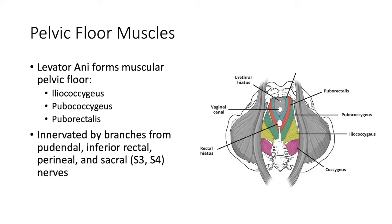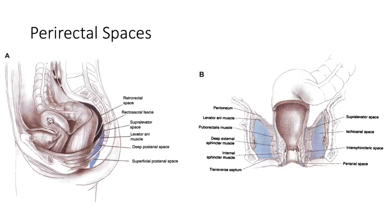It is worth knowing the muscles that make up your levators. The spaces created within the levators — we'll come back to this when we talk about abscesses. From an AP view and a lateral view, you have a superficial or perianal space — and that's just one space.